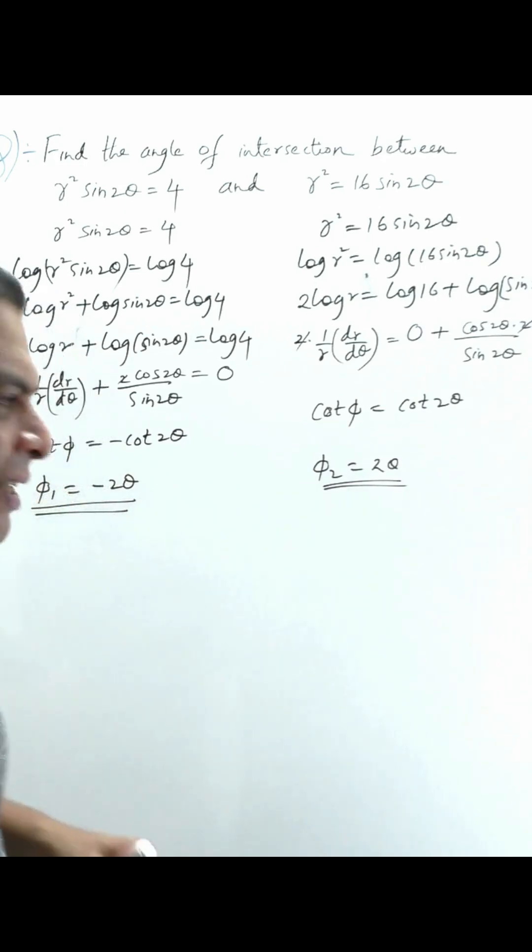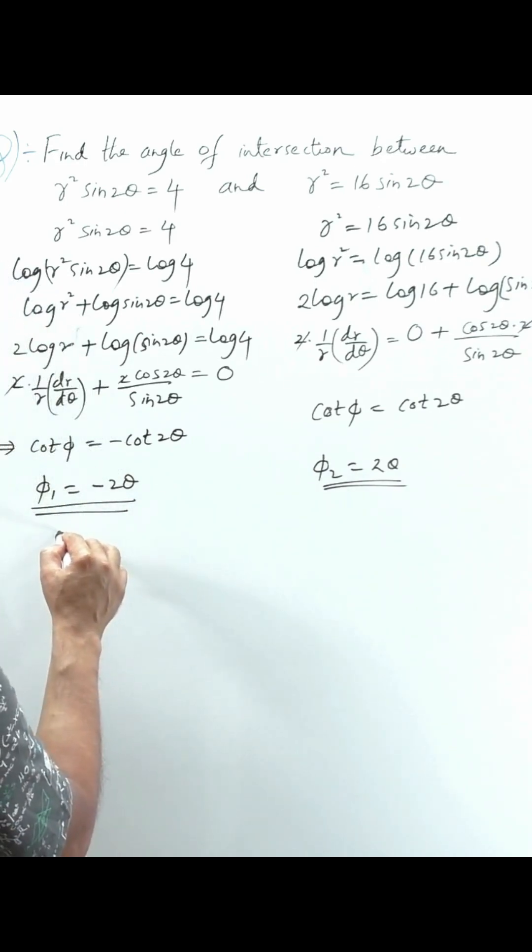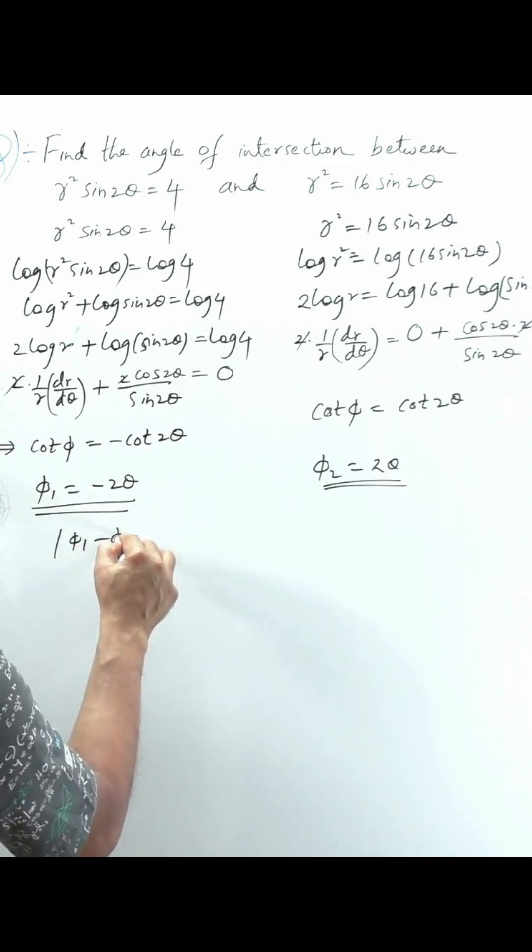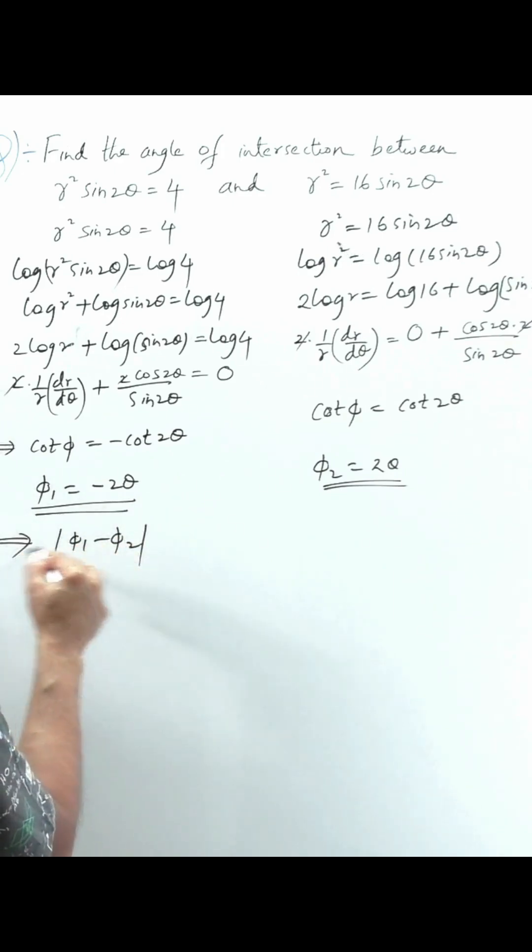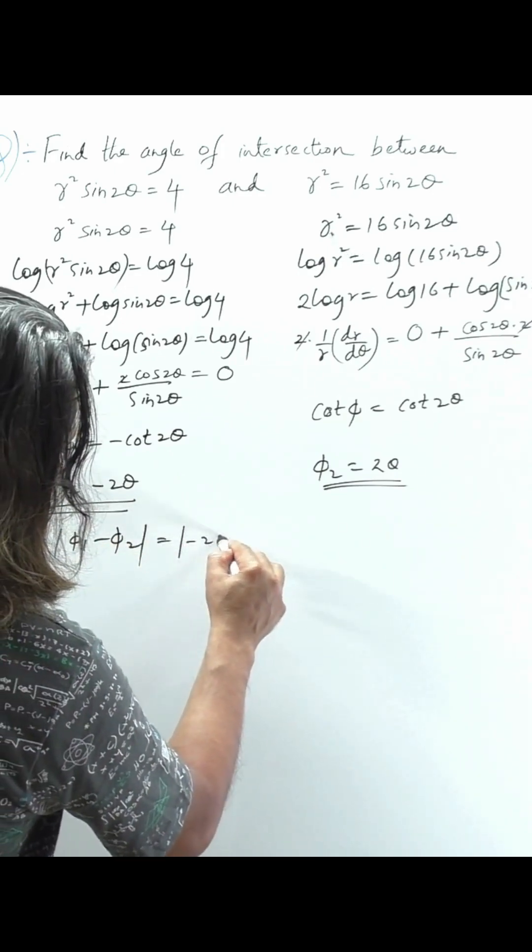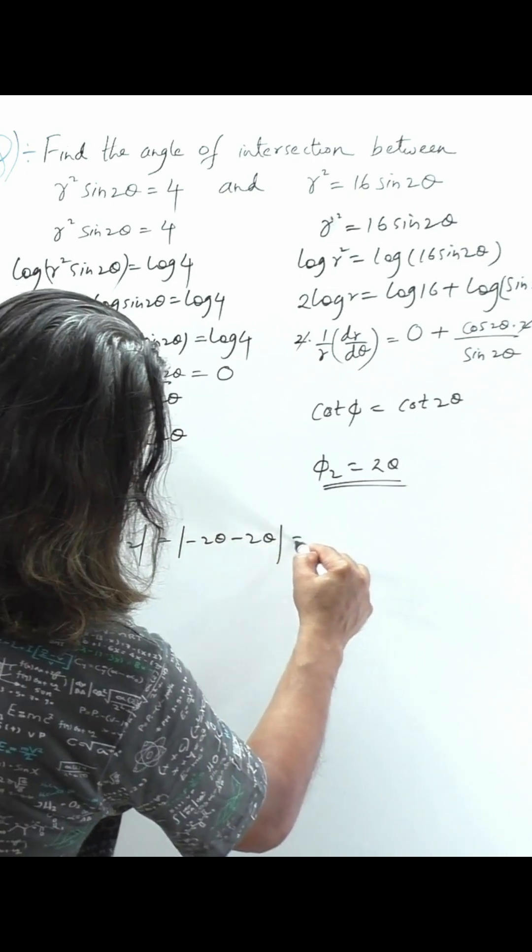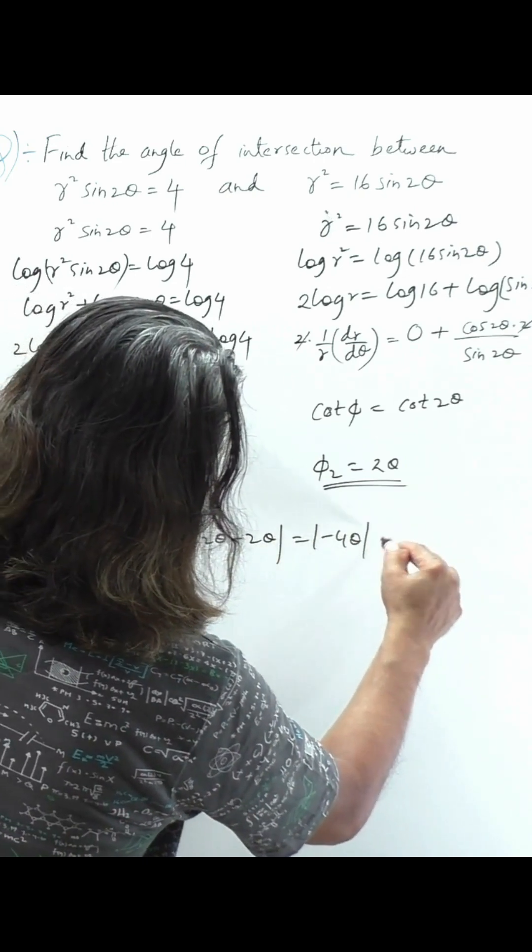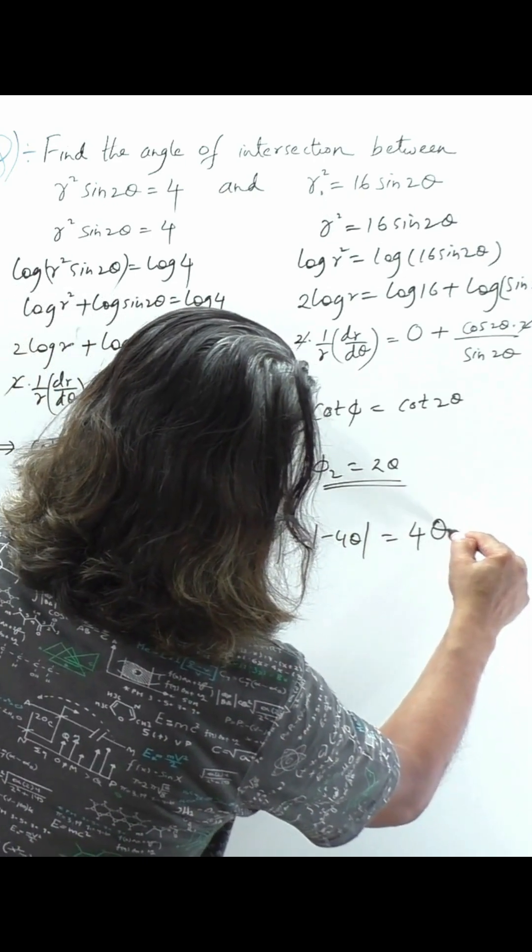The angle of intersection is |φ₁ - φ₂|. So we have φ₁ minus φ₂, which equals minus 2θ minus 2θ, that is minus 4θ.